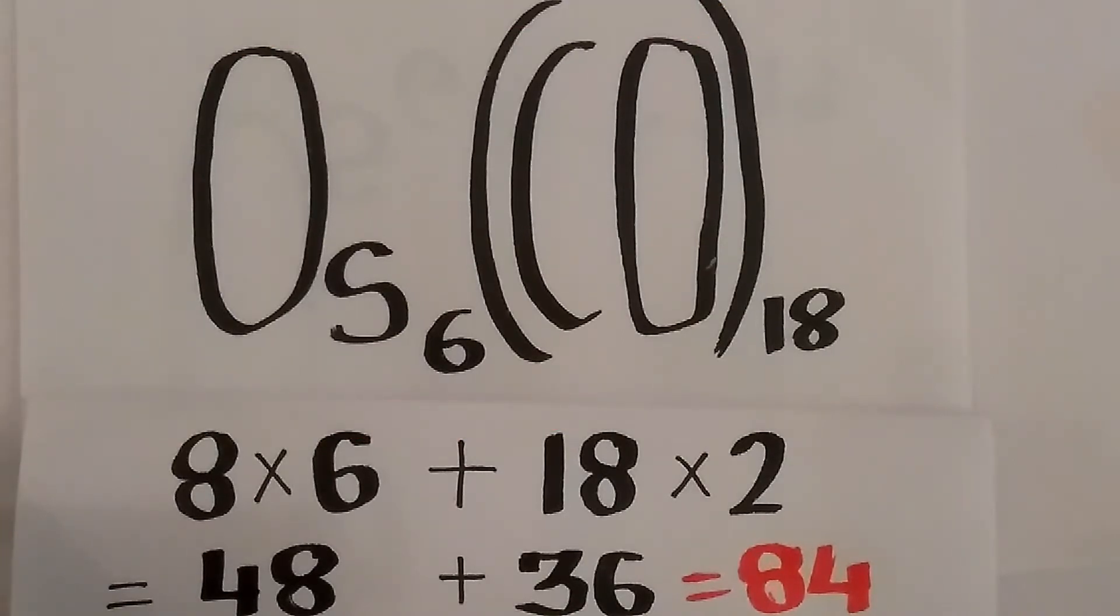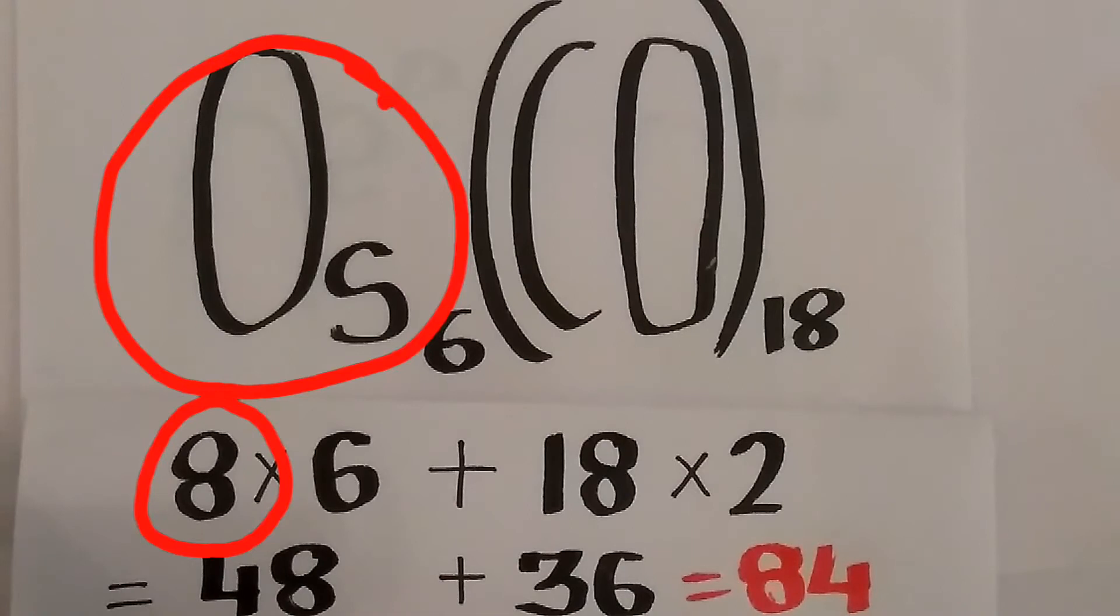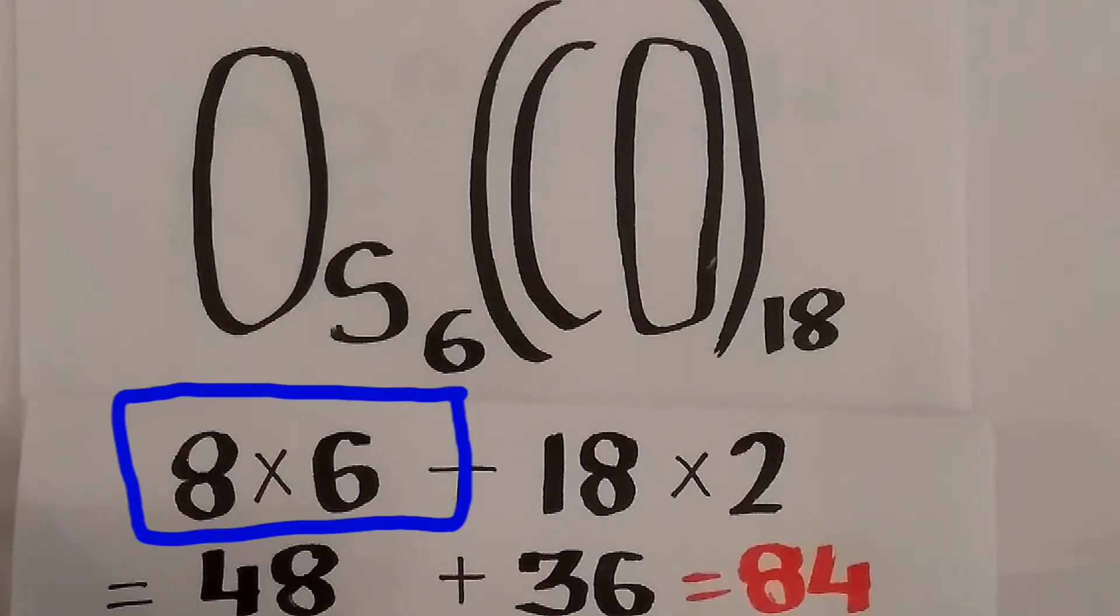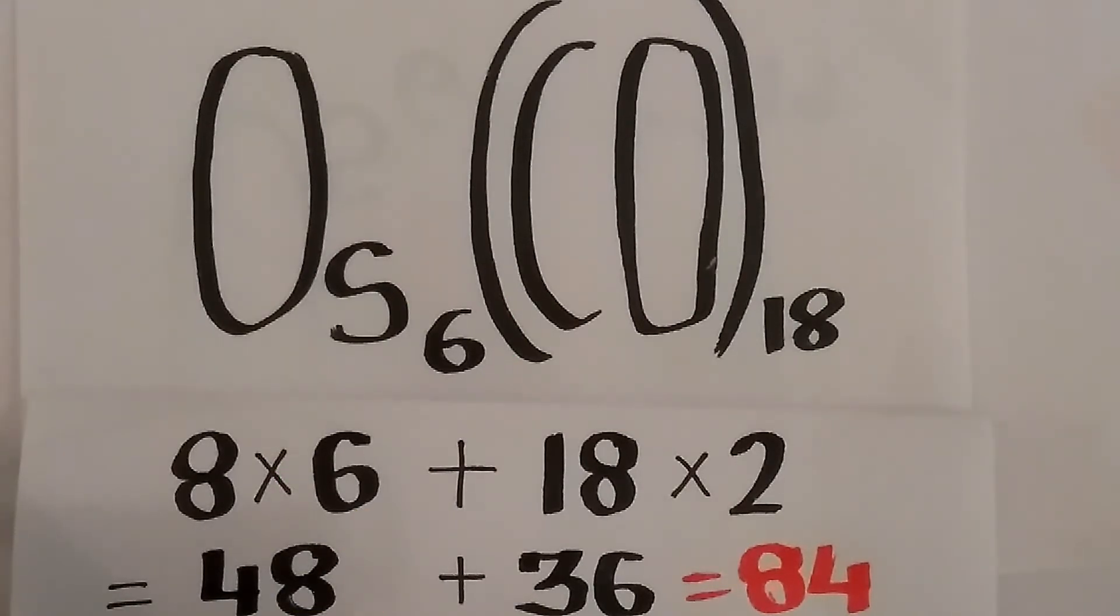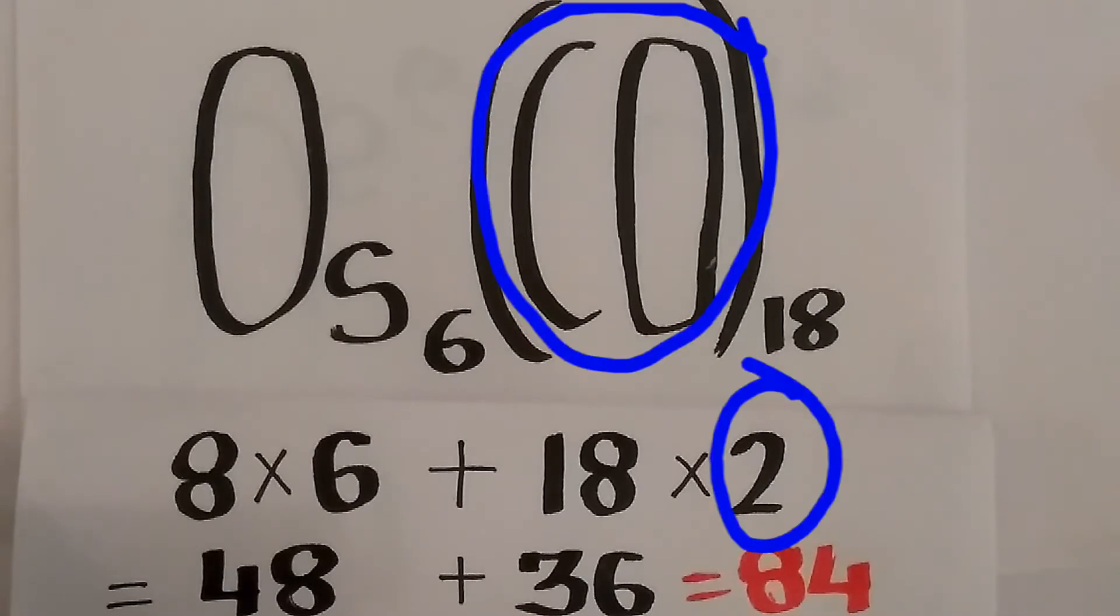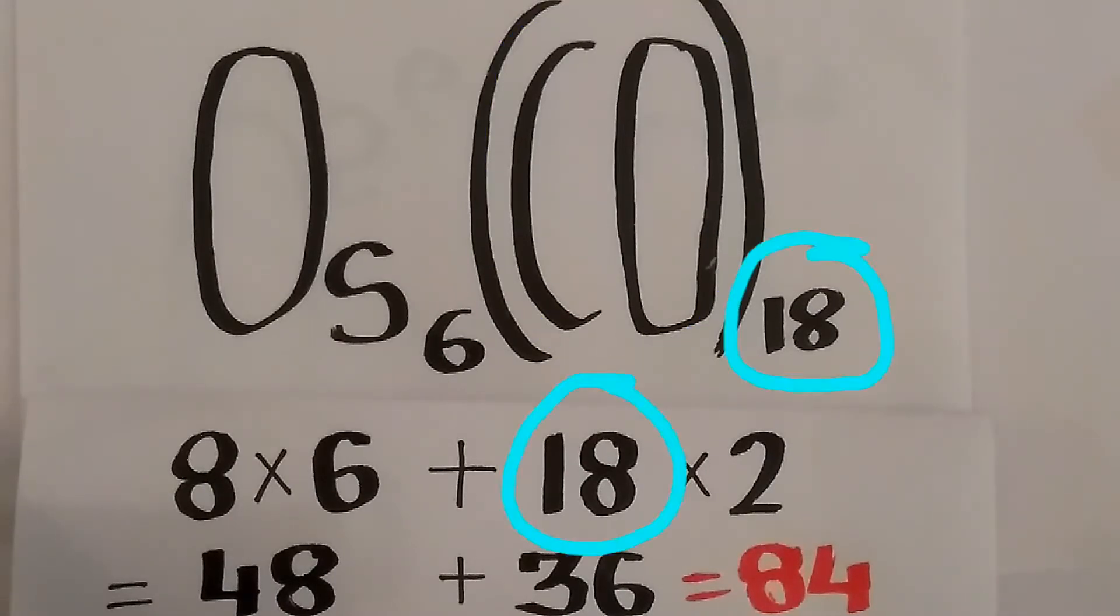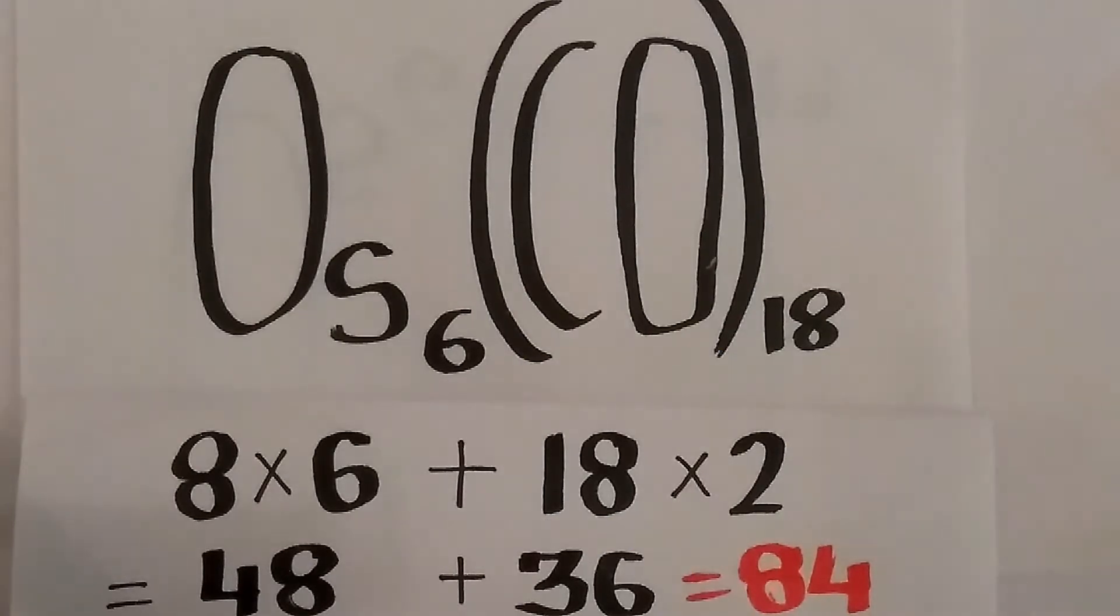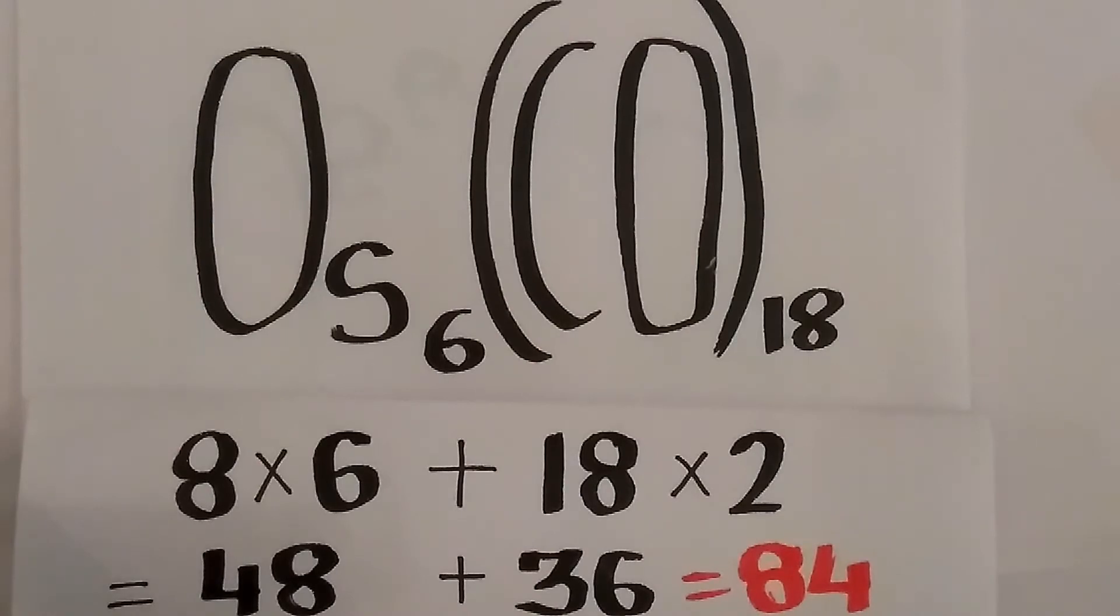The valence electron for osmium is 8, and we have 6 osmium, so 8 multiplied by 6. The electrons given by carbonyls is 2, and we have 18 carbonyls, so 18 multiplied by 2. Therefore, the total valence electron is 84.